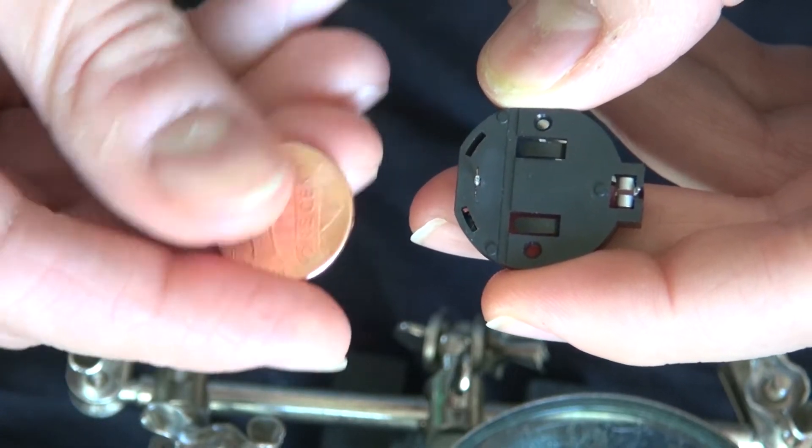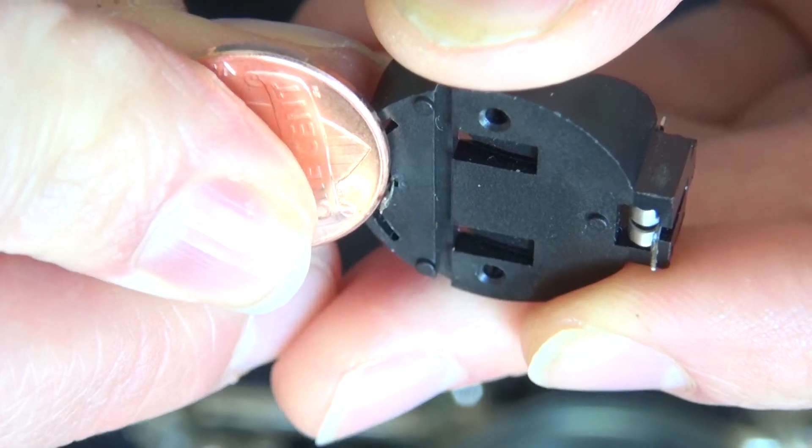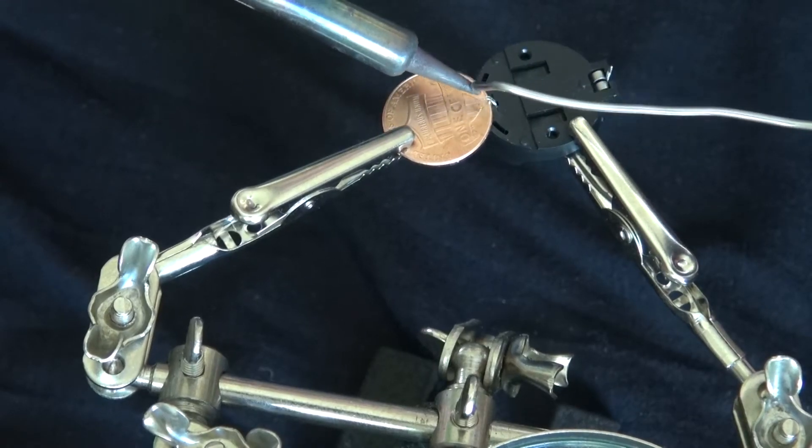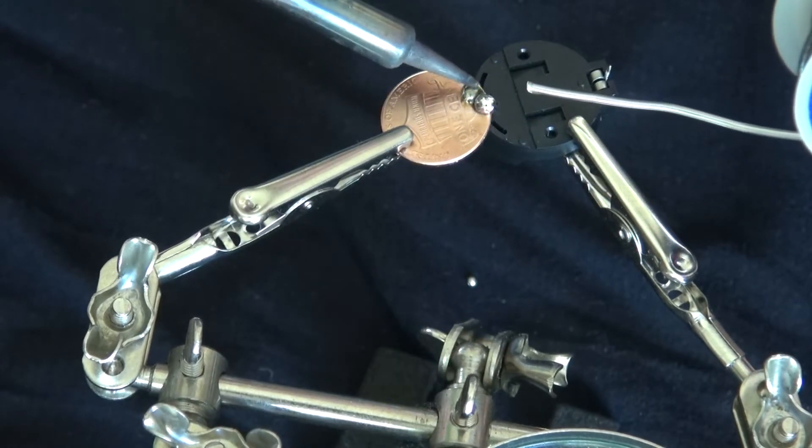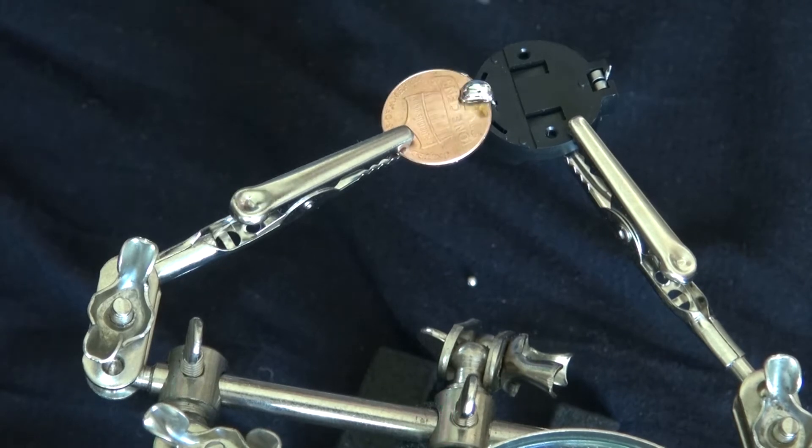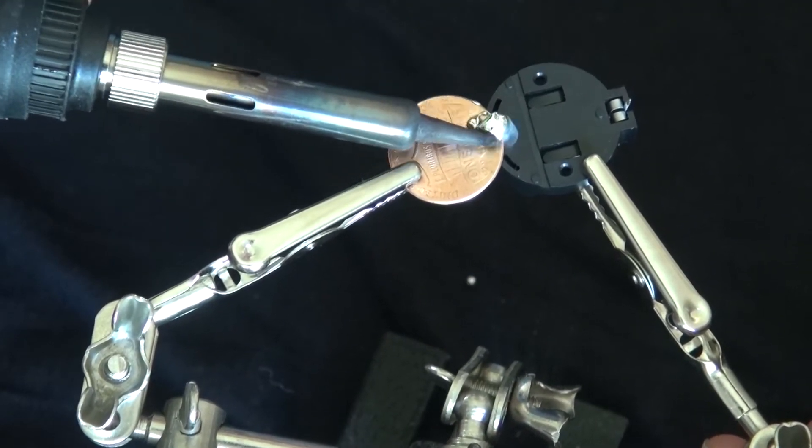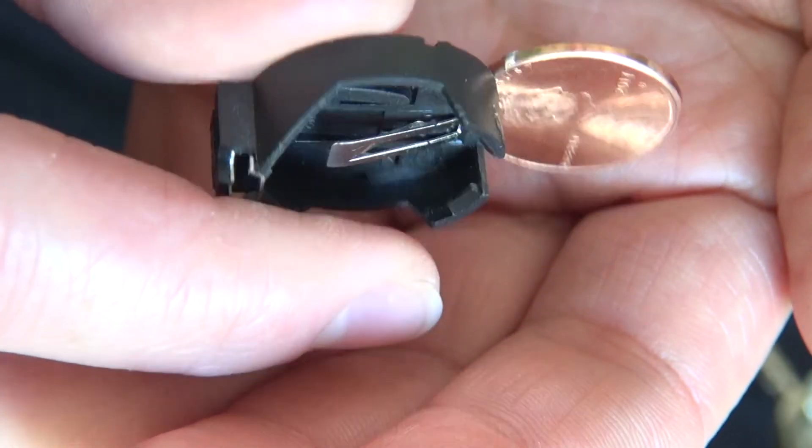First I want to start with taking this penny and putting it next to the battery holder. I need to bend this lead right here and now I want to put some solder to hold it into place. Soldering onto a penny is actually a little bit difficult so be aware of that and it holds in pretty good.